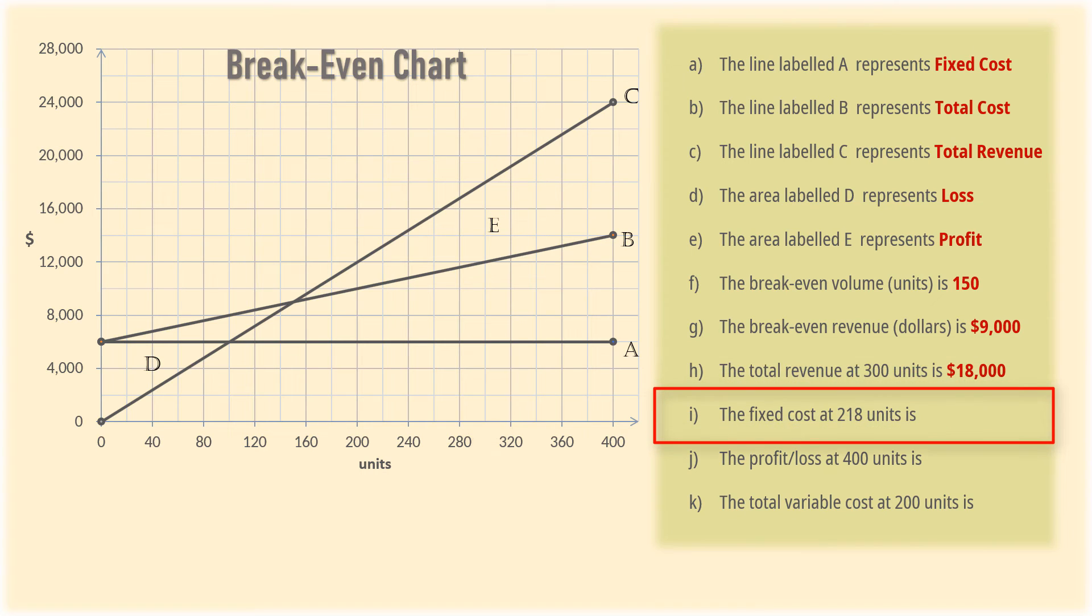For I, we need the fixed cost at 218 units. Since the fixed cost is the same for any number of units, it will remain at $6,000.